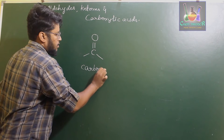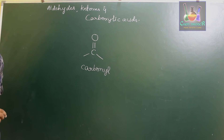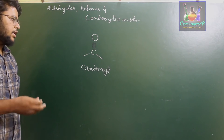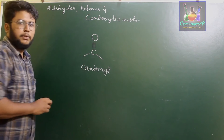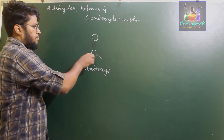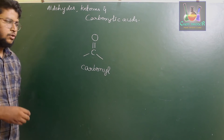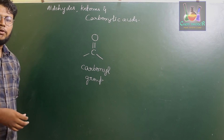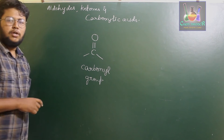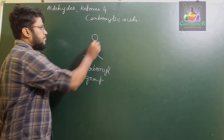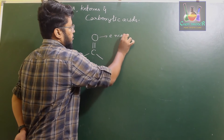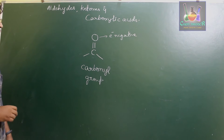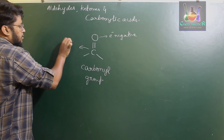This C=O group is called the carbonyl functional group, and it has several different derivatives depending upon the elements — carbon, hydrogen and oxygen — which are attached to the carbonyl carbon. In this carbonyl group, oxygen is more electronegative than carbon, and the carbon present in the carbonyl is sp2 hybridized.